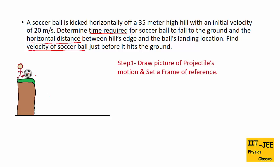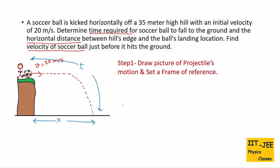Step 1: draw a picture of the projectile motion. The ball is launched horizontally with velocity v equals 20 meters per second. As gravity acts on the ball, it moves to the right and also downward, tracing a curved path. We need to find the total time t from the initial point to the final point, the horizontal distance x, and the final velocity of the soccer ball just before it hits the ground. So we need to find three terms: t, vf, and x.